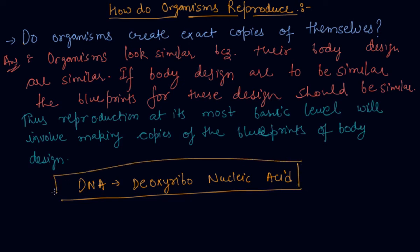The chromosomes contain the information for inheritance of features in the form of DNA. The DNA in the cell nucleus is the information source for making proteins.